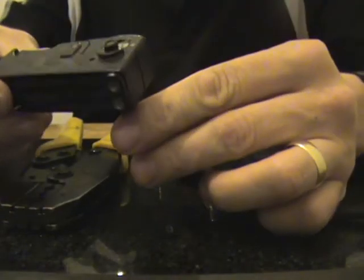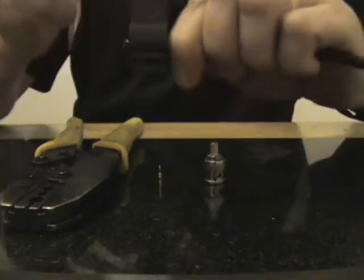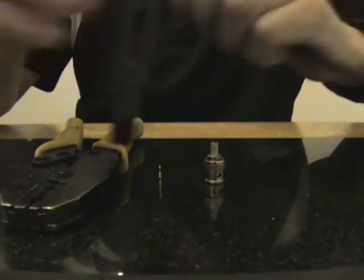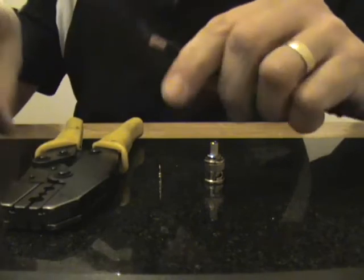Using your stripping tool, put it onto the cable slightly overlapping and turn it around a couple of times, exposing the copper conductors from inside the coax.